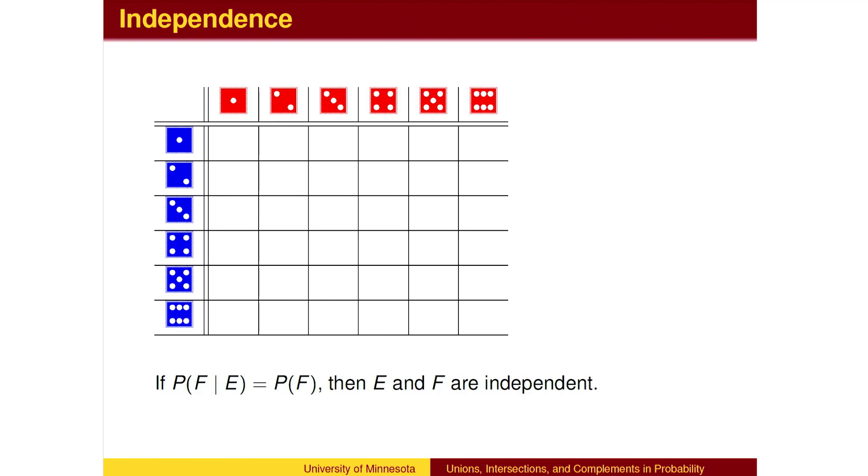If the probability of F, given E, is the same as it was without knowing E, then E and F are said to be independent. In terms of the two-dimensional grid, this means that all of the columns contain information that is consistent, not depending on the rows.